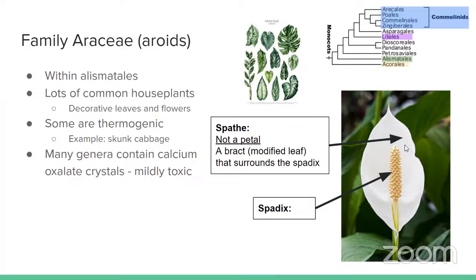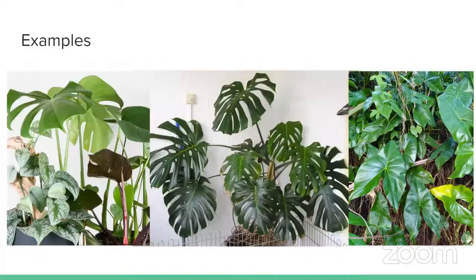Some outdoor examples include skunk cabbage, which is actually thermogenic — it makes its own heat. Aroids often contain calcium oxalate crystals, which are mildly toxic. So if you're looking for plants to forage in the wild, this is not your best bet. When I was stuck in quarantine I saw all the skunk cabbage come up first — very beautiful bright green, it looks like cabbage or lettuce, but you should not eat it. Here we can see some examples of houseplants you might have at home within this group.